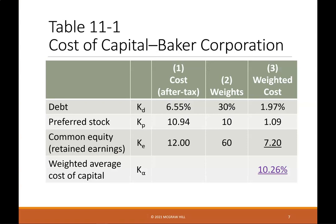Table 11-1: Cost of capital for Baker Corporation. We have debt, preferred stock, common equity, or retained earnings. We have the cost after tax, and the weights that have to equal 100%. Then we have the weighted cost, where you take the cost after tax and multiply by the weights, then add up all the weighted costs. That gives you your weighted average cost of capital.